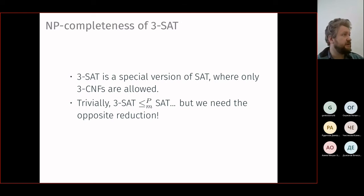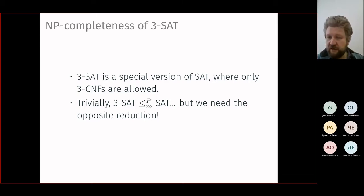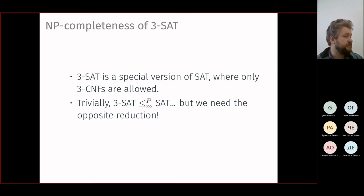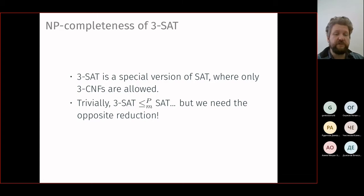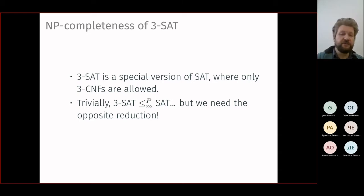The direction of reduction matters. To prove something is easy, reduce it to something already known to be easy. To prove something is hard, reduce something already known to be hard to it. Here, to prove 3SAT is hard, we must reduce SAT to 3SAT. This is non-trivial: we must transform an arbitrary boolean formula into a 3-CNF. Simply applying De Morgan and distributivity can cause exponential blow-up.